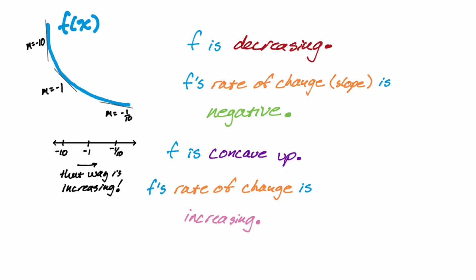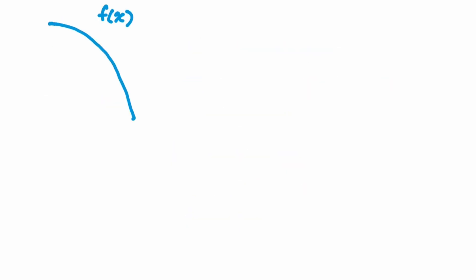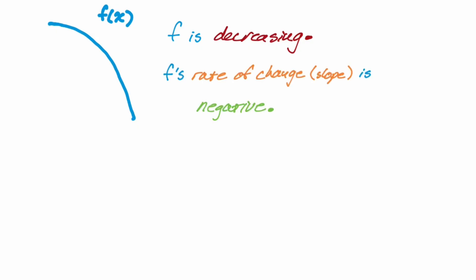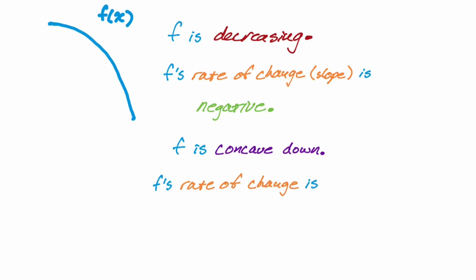Make sure you're memorizing these things. As you do more in calculus — and I tend to think this is really just a preview of calculus — you talk about this all the time. So we've got this last function. F is definitely decreasing because as you move from left to right, the Y values get smaller. When we say a function is decreasing, we can say its rate of change, or slope, is negative. Then we want to talk about the overall shape — the concavity. F here is concave down. If a function is concave down, its rate of change is decreasing.